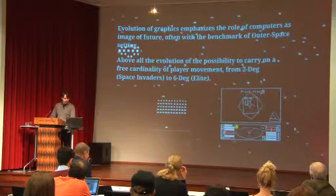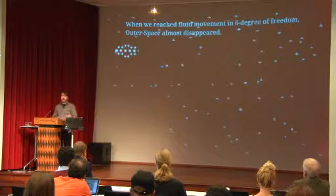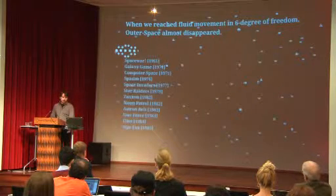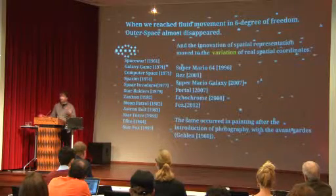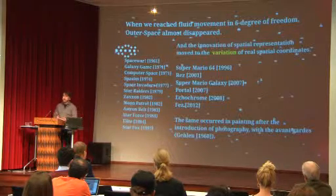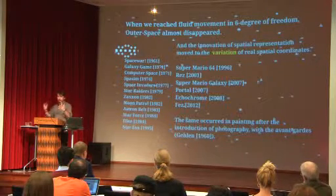Also from Zagal: the evolution of graphics emphasized the computer's role as an image of the future, often benchmarked against the outer space setting — above all, the evolution of the possibility of free cardinality in player movement, from the two degrees of freedom of Space Invaders to the six degrees of freedom of Elite in 1984. When we reached fluid movement in six degrees of freedom at the start of the 1990s, outer space almost disappeared from titles. And innovation in spatial representation moved to variation of real spatial coordinates — for example, in Portal or F.E.T.S., this is really clear.